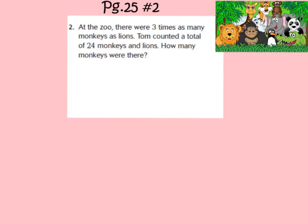Alright, let's look at our first problem. It's on page 25, and we're looking at number 2. We're going to underline parts of the word problem together, so make sure you're underlining with me. Let's go ahead and read the problem. At the zoo, there were three times as many monkeys as lions. Tom counted a total of 24 monkeys and lions. How many monkeys were there?